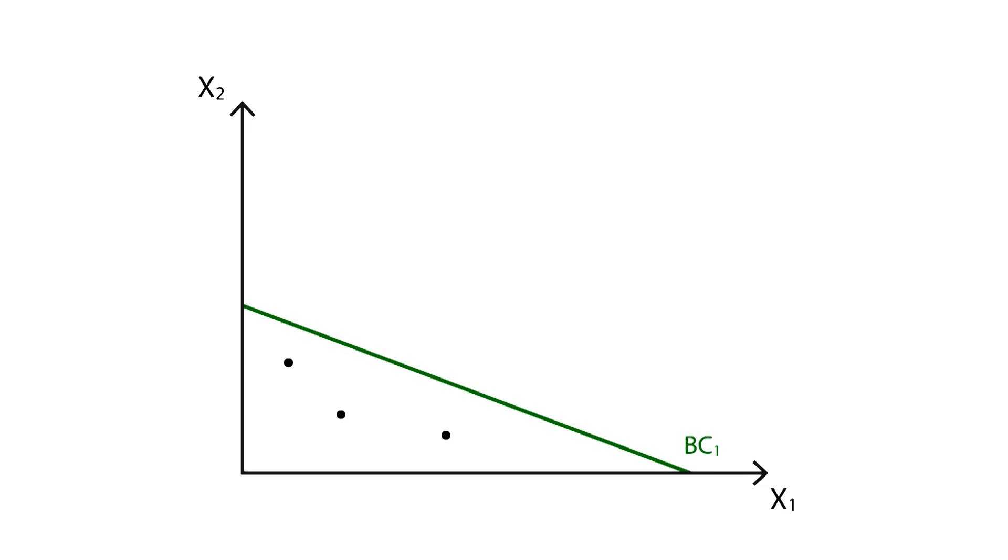However, only those points that are situated at the exact budget constraint line are entirely using the whole budget. This way, point A represents a bundle in which all of the budget is used, contrary to point B.